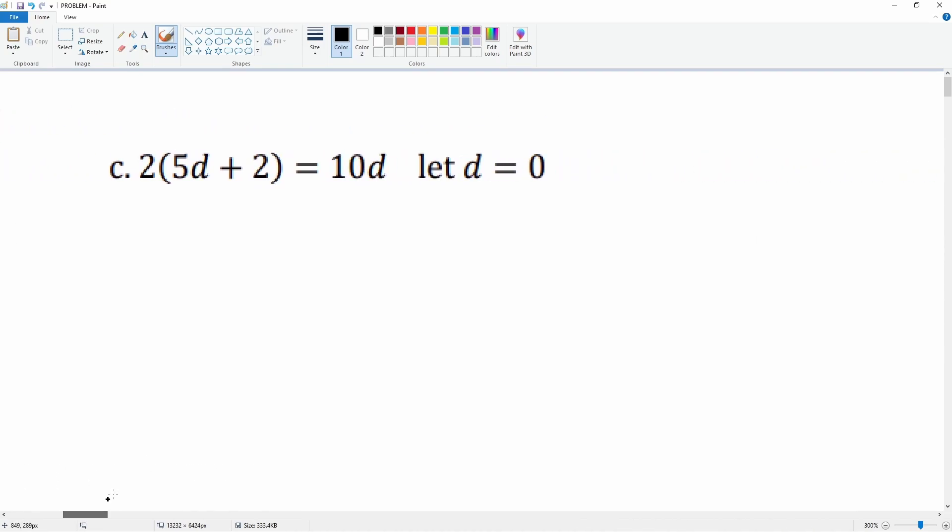Alright, let's look at C here. 2 parenthesis, 5d plus 2, close the parenthesis, is equal to 10d. That d becomes 0. Let's erase this and substitute in that variable of 0.